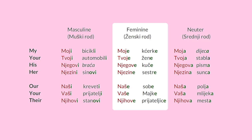A changing into an E for the feminine words to make them plural. My daughters would be Моє кчерке. Your wife — Твоє жене. Негове куче — his houses. Незине сестре — her sisters. Наше собе — our rooms. Ваше мајке — your mothers. Нихове приятелице — their friends. That's feminine plural.